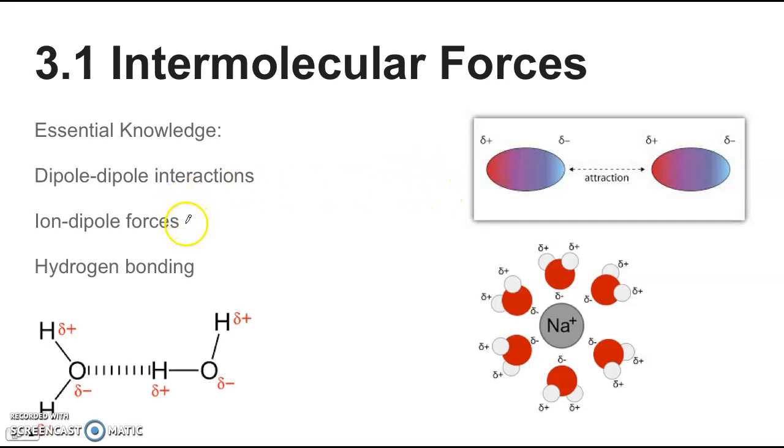The next one is ion-dipole forces. This generally happens between water, which is a polar molecule, and ions in an ionic solution. The negative end of the water molecule is attracted to the positive sodium ion, in this case. If you have a negative ion like fluoride, then the other end of the water molecule would be attracted to it. That's called an ion-dipole force.